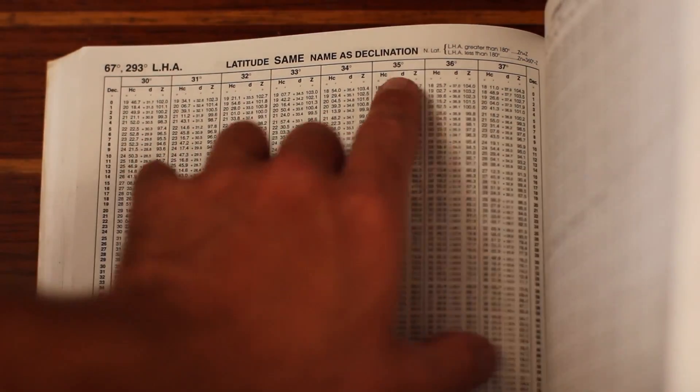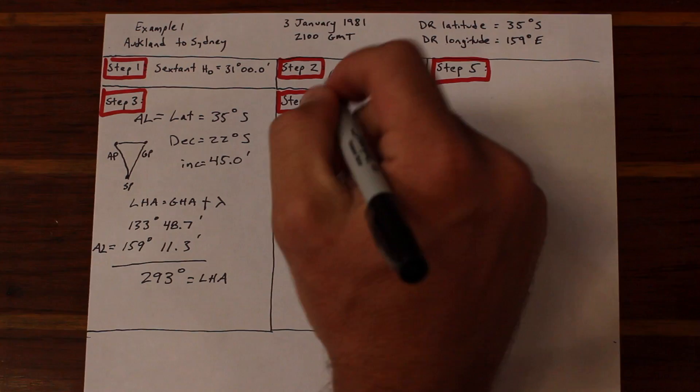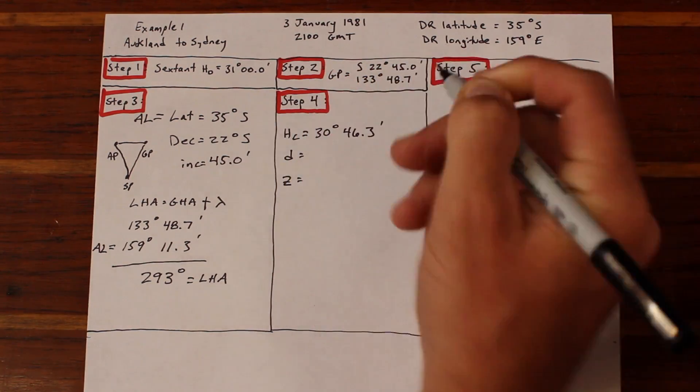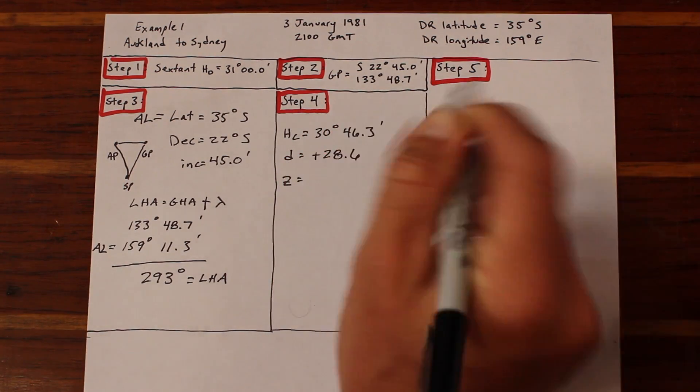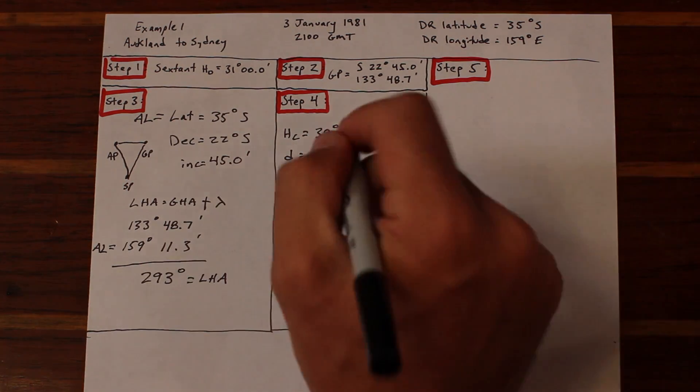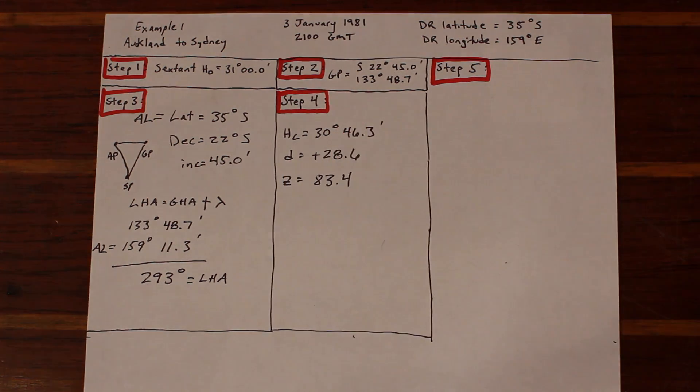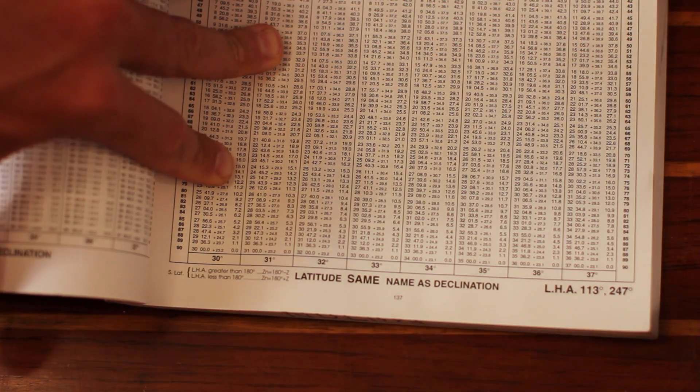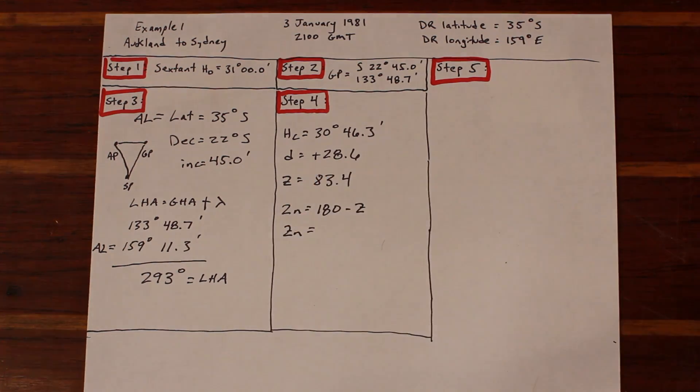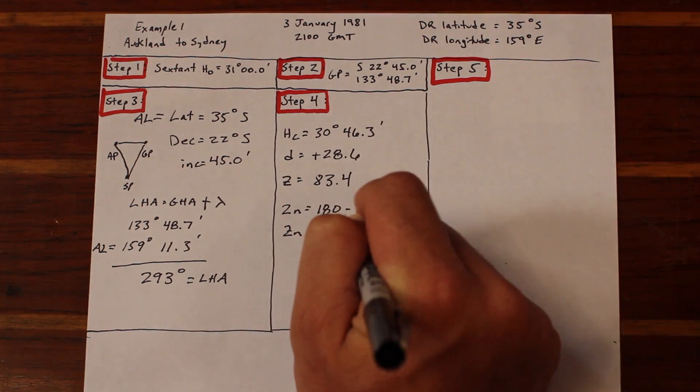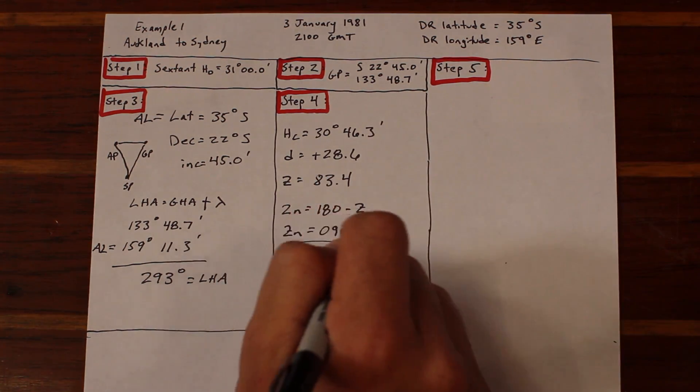Now into HO 229 for our answers. The computed height is 30 degrees, 46.3 minutes. Our D number, which will help us account for our declination increments, is plus 28.6. And our azimuth angle, or the bearing to the sun, is 83.4 degrees. That seems close to right, but we should apply our rules and we see that the actual azimuth angle is 180 minus Z, or 96.6 degrees true.